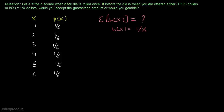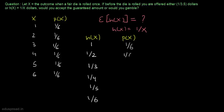Let's note down the possible values of h(x) and their corresponding probabilities. When x equals 1, h(x) is also equal to 1. When x equals 2, h(x) equals 1/2. Similarly, it is 1/3, 1/4, 1/5, and 1/6, and the probability values are 1/6 for all these values.